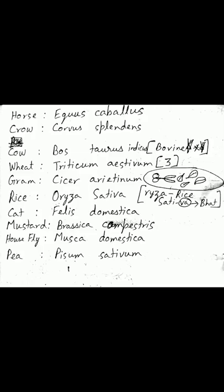Wheat is Triticum aestivum. A trick to remember: think of eating three rotis — 'three' sounds like triticum. Gram (chana) is Cicer arietinum.